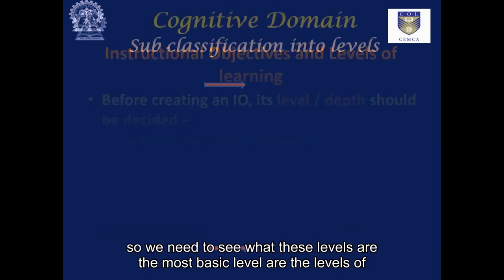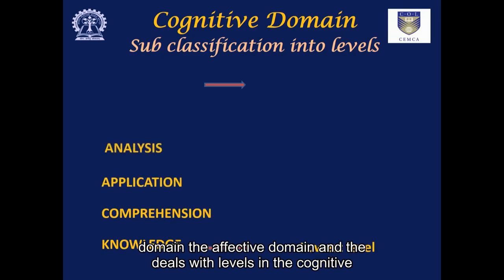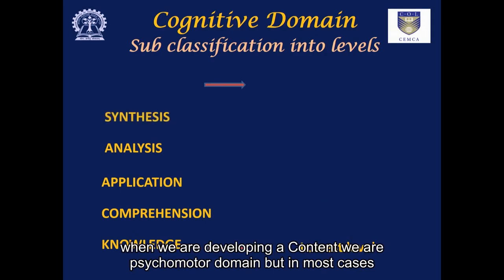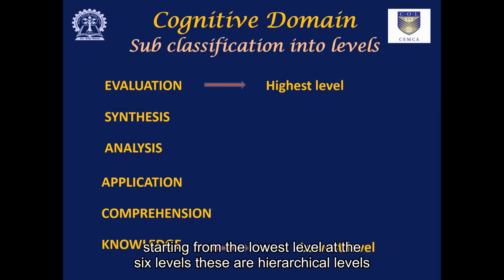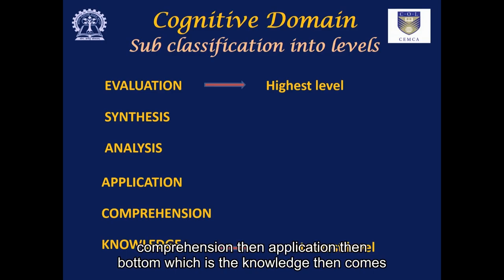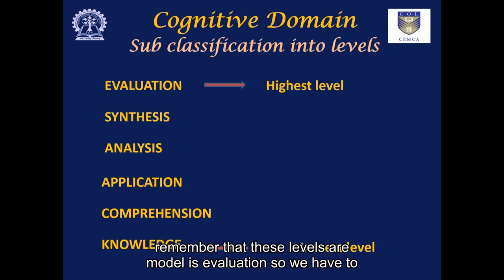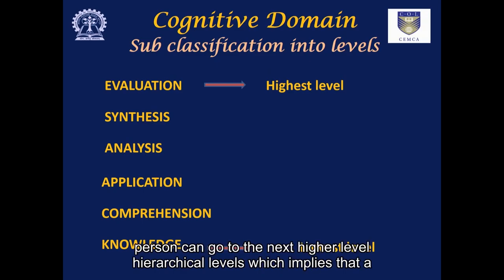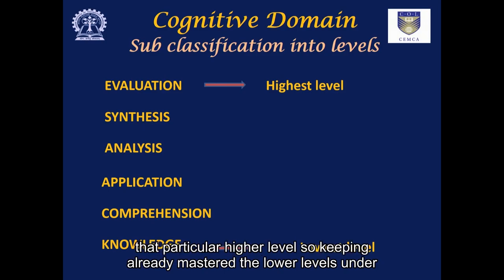The most basic levels are the levels of Bloom's taxonomy. Bloom's taxonomy deals with levels in the cognitive domain, the affective domain and the psychomotor domain. But in most cases, when we are developing e-content, we are usually restricted to the cognitive domain. In the cognitive domain, we have 6 hierarchical levels starting from the lowest: knowledge, then comprehension, then application, then analysis, then synthesis, and the highest level is evaluation. A person can go to the next higher level only when he or she has attained the lower level, and a person who has reached a higher level has already mastered all the lower levels beneath it.